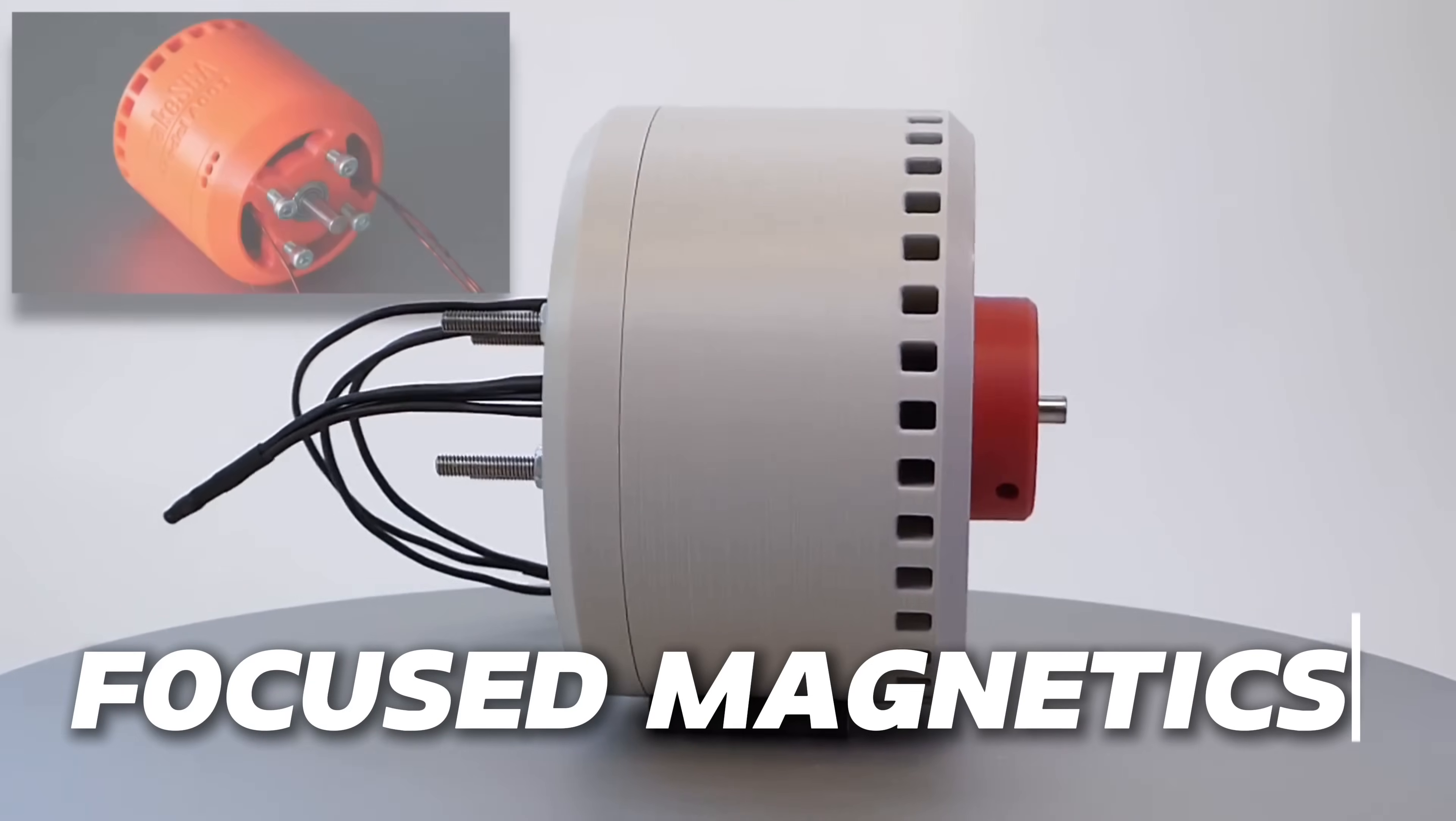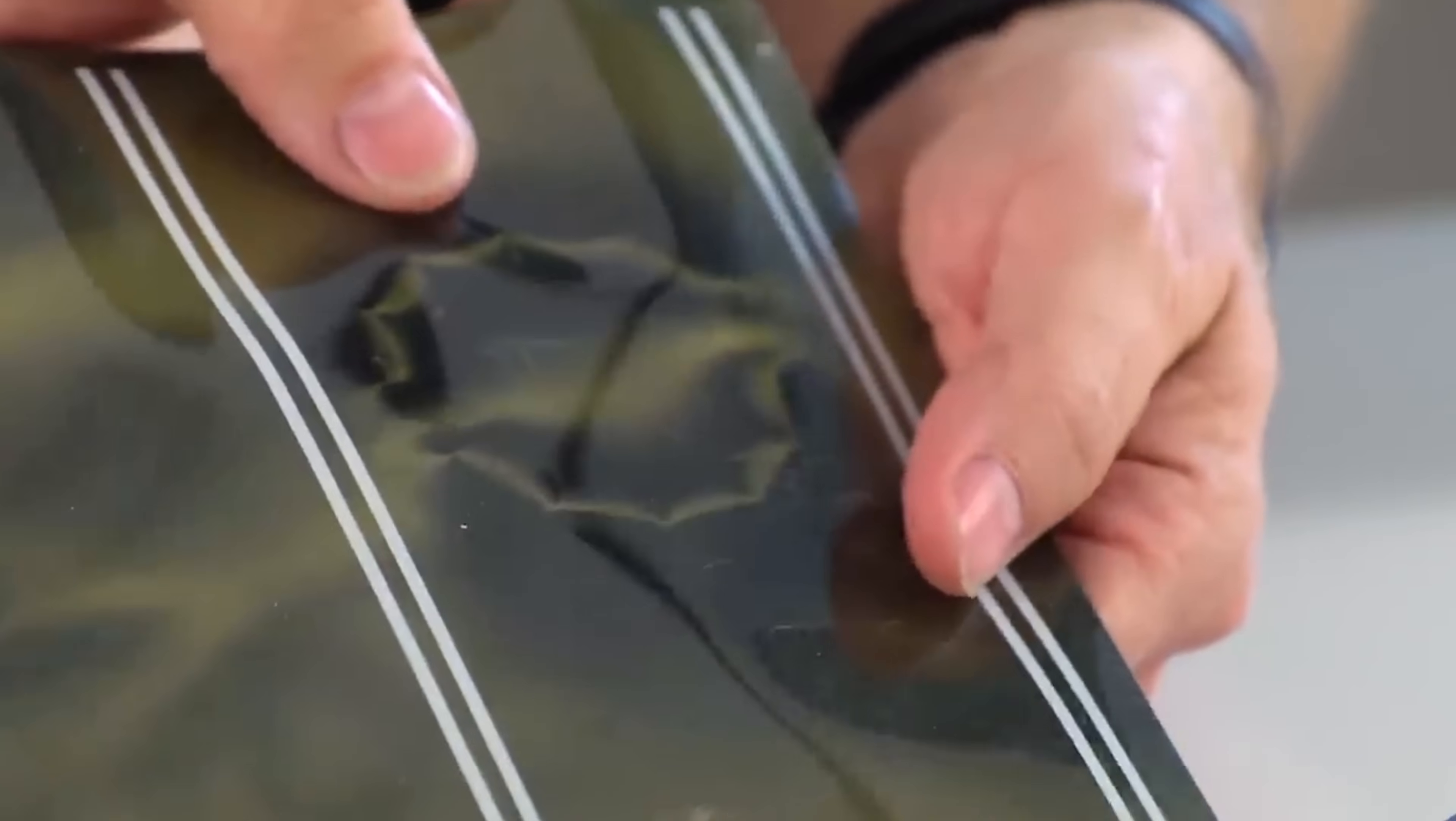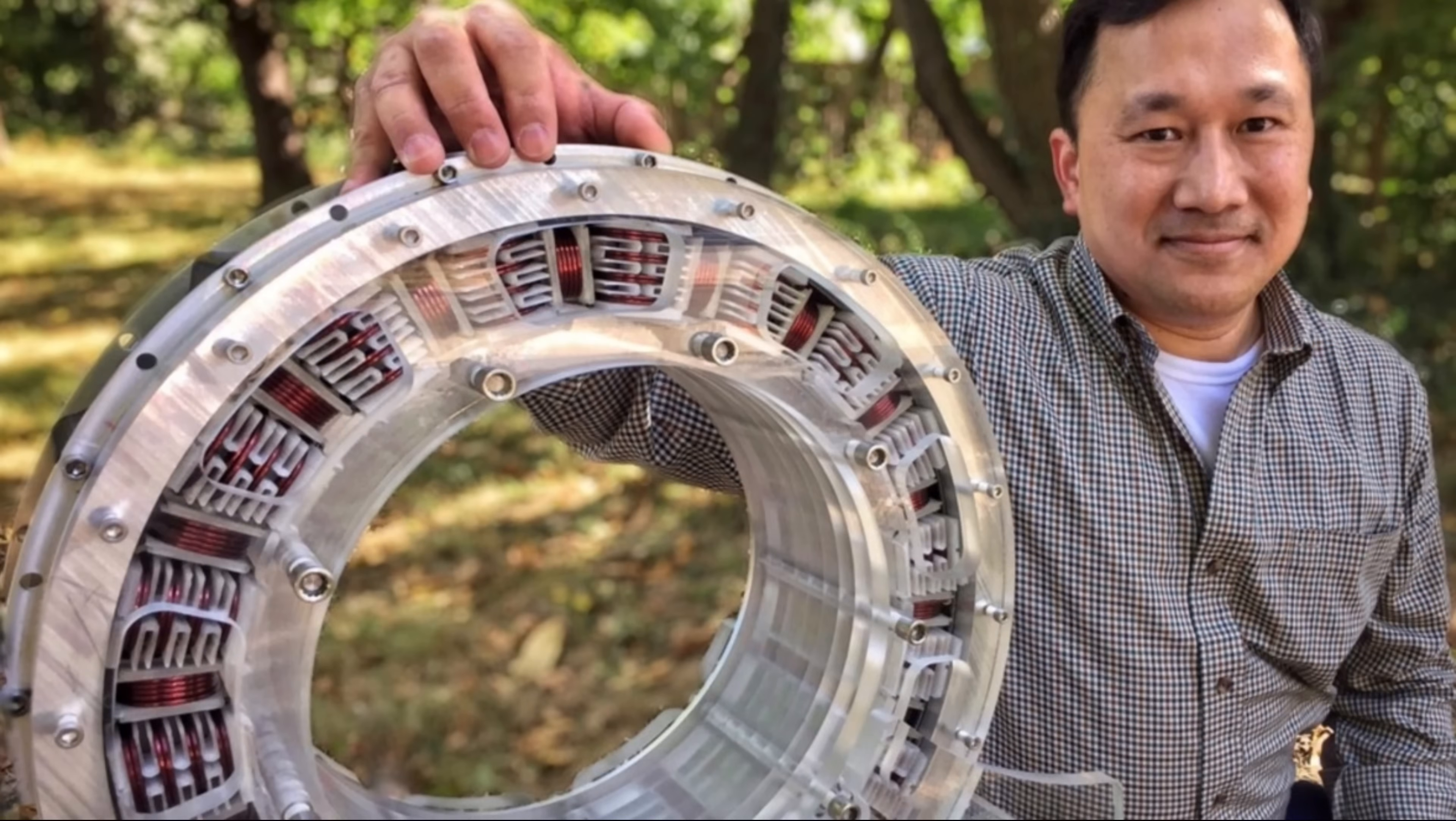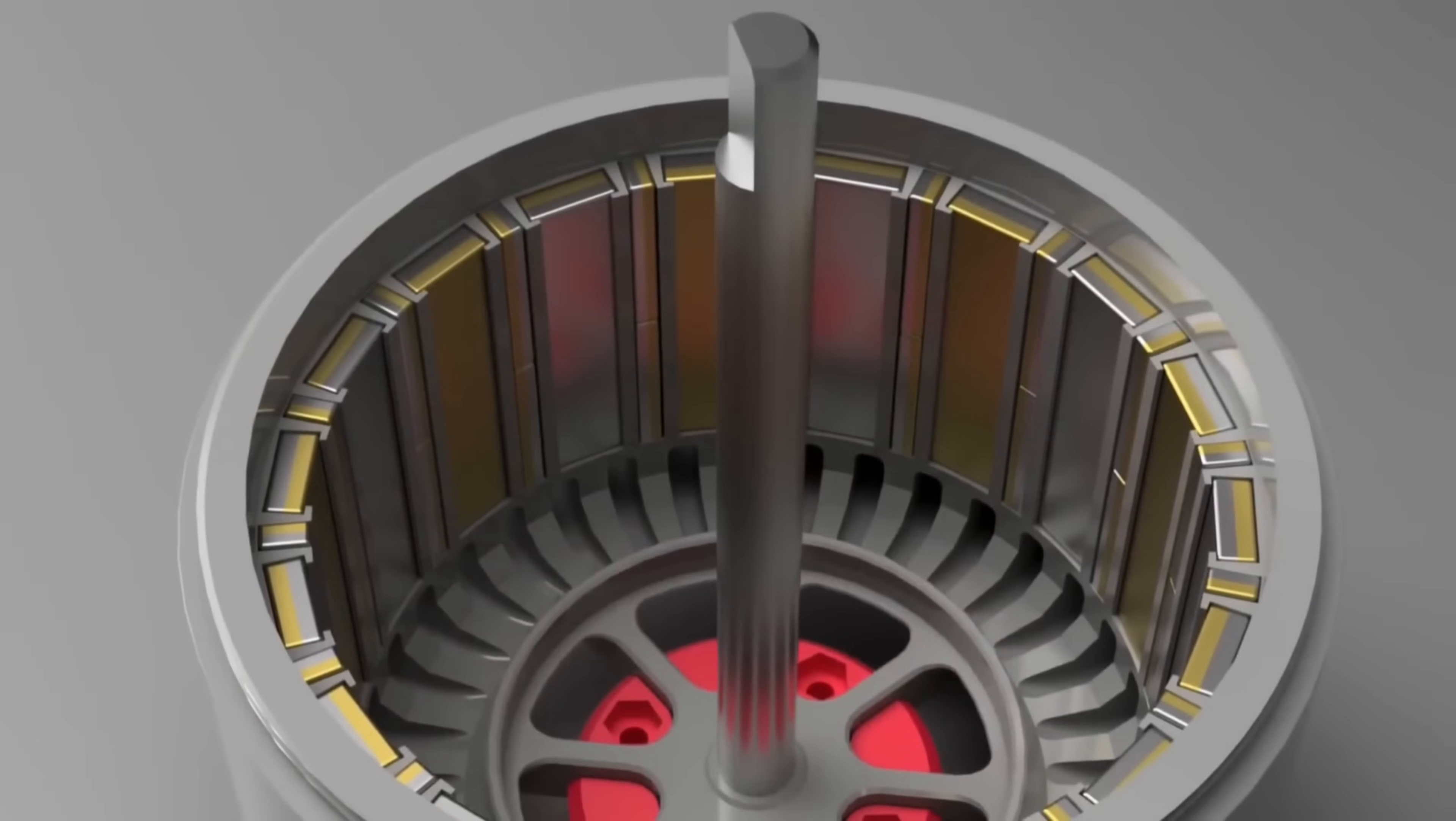Focused Magnetics has unveiled a groundbreaking concept that claims to surpass the efficiency of any other motor currently available. Similar to a Hallback Array, this motor is capable of directing energy directly to the stator with minimal loss. However, it is important to scrutinize the legitimacy of this claim and determine if it truly represents a revolutionary advancement.